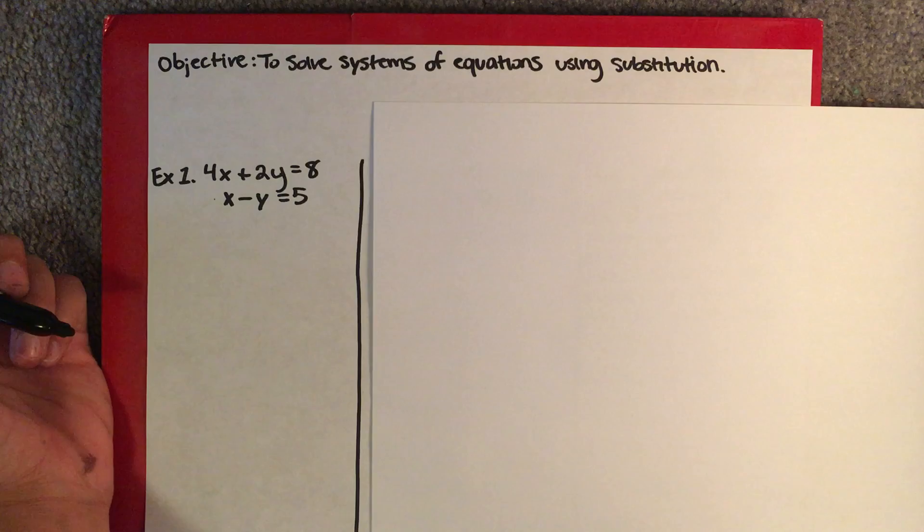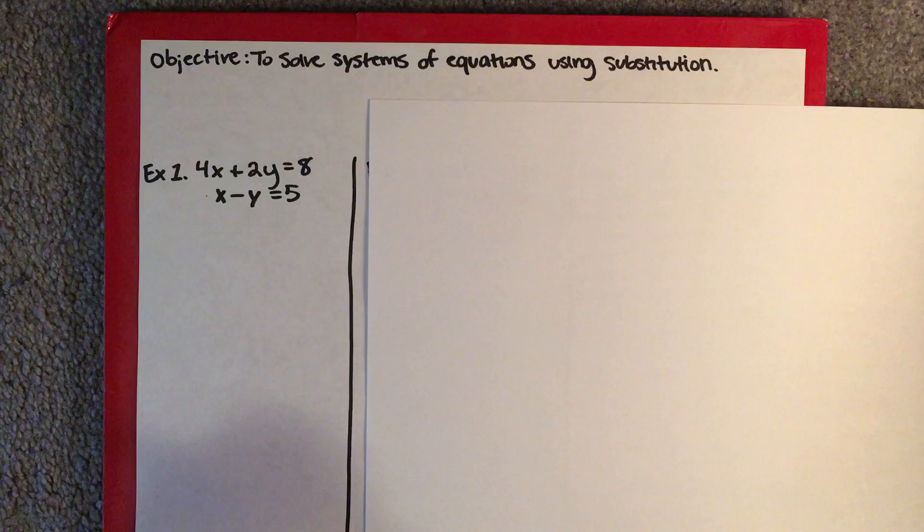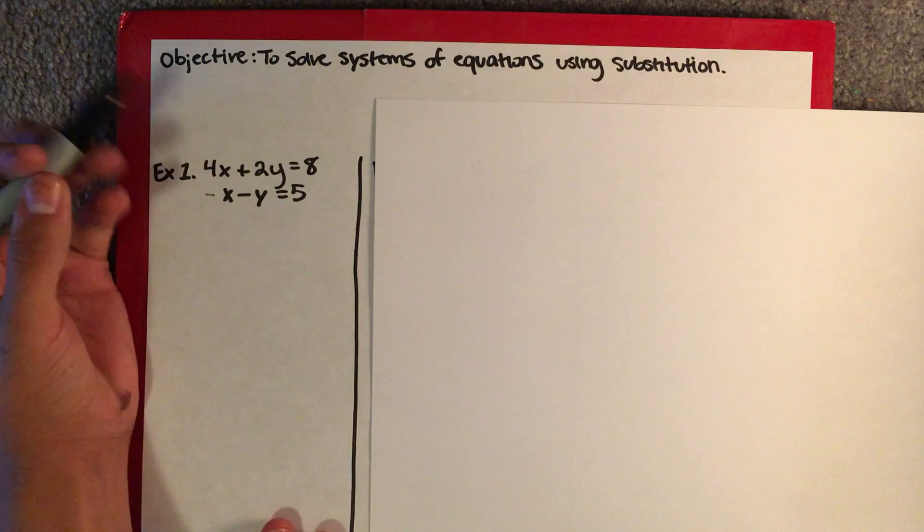The first way to use substitution is by solving for one of the variables and plugging it in. For example, if you have a problem such as this one — 4x plus 2y is equal to 8, and x minus y is equal to 5 — you simply solve for one of the variables in either one of these equations and plug it into the other one that you didn't use.